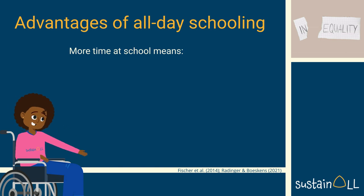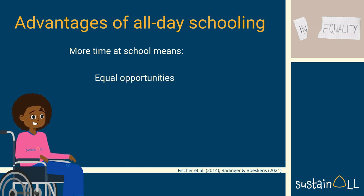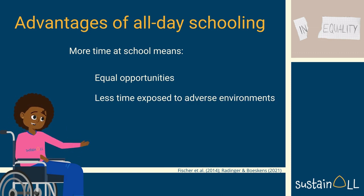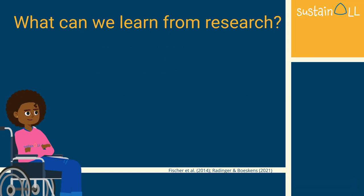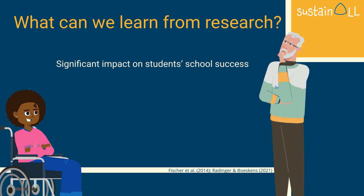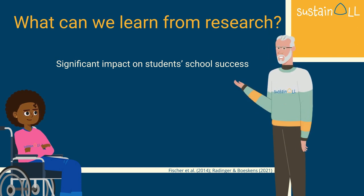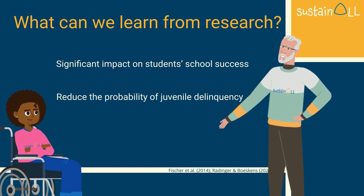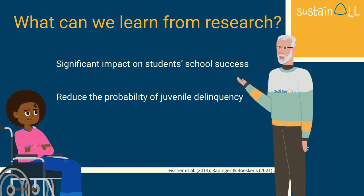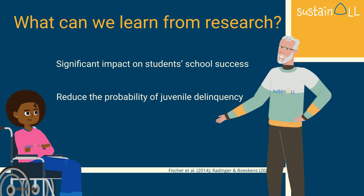On the other hand, all-day schooling promotes equal opportunities for all students, allowing socially disadvantaged families to access resources that otherwise would be unattainable. In the case of at-risk students, longer school days may mean less time exposed to adverse environments. Several studies have shown that extending school time has a significant impact on students' school success, especially in students from economically disadvantaged contexts. In addition, there are studies that prove that this approach can reduce the probability of juvenile delinquency. There are also studies that analyze social and economic outcomes associated with all-day schooling, but learning outcomes are the most addressed.